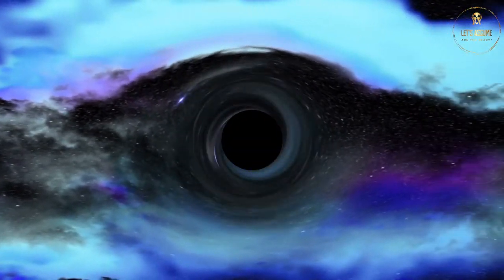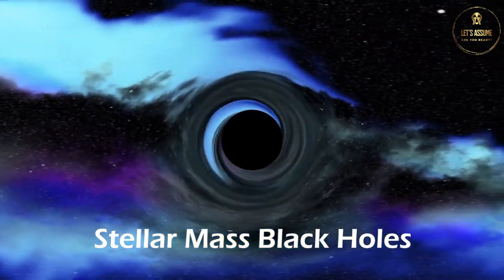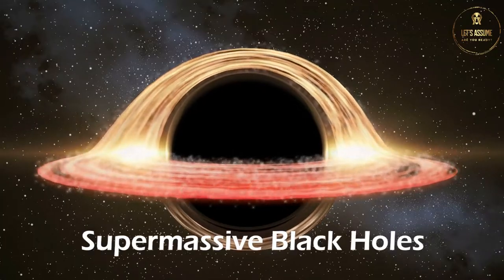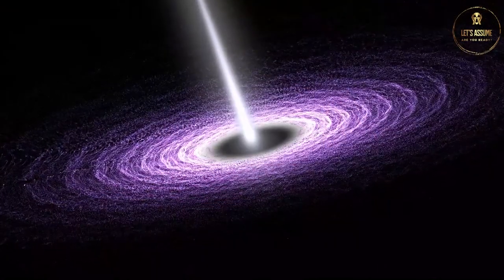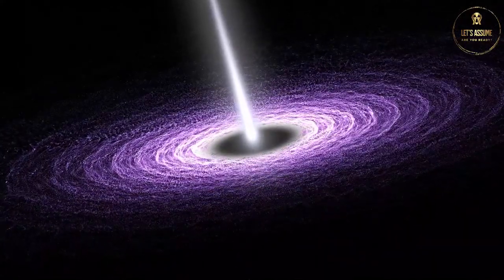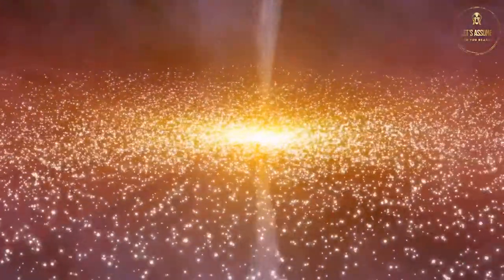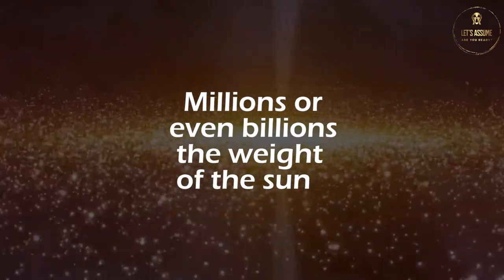First, the smaller black holes are the stellar-mass black holes, and have a mass 10 times the size of the sun. Then there are the supermassive black holes, which we don't know all that much about, aside from the fact that they're found at the center of galaxies, and have a mass that can weigh millions or even billions the weight of the sun.